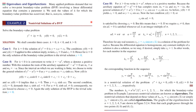Many applied problems demand that we solve a two-point boundary value problem involving a linear differential equation that contains a parameter lambda. We seek values of lambda for which the boundary value problem has non-trivial, that is, non-zero solutions. The problem we will consider is y double prime plus lambda y equals zero, with boundary conditions y(0) = 0 and y(L) = 0. Since zero does not equal L, that is a boundary value problem.